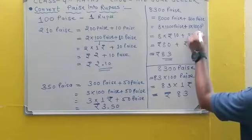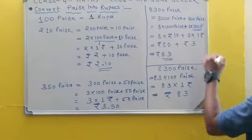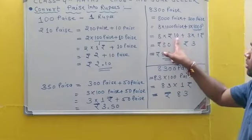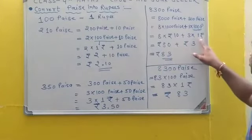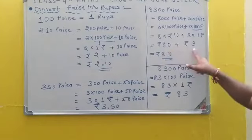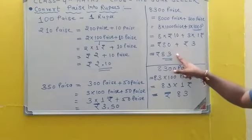100 Paise, 100 Paise equals 1 Rupee. 8 into 10, 80 Rupees, and 3 into 1, 3, so 80 plus 3 equals 83 Rupees.